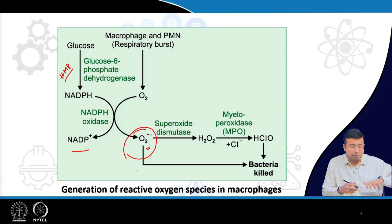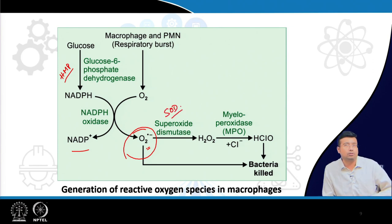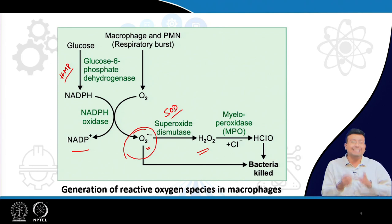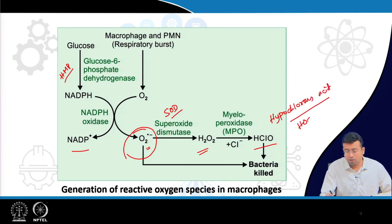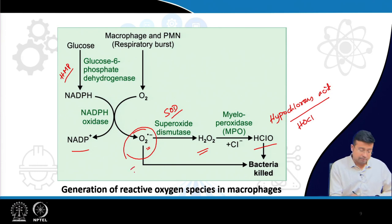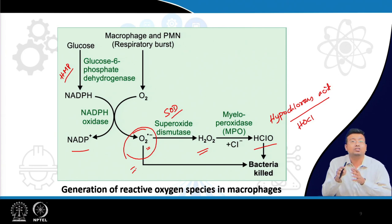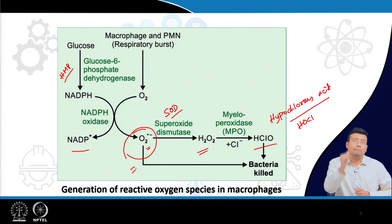When NADPH oxidase acts, NADPH is oxidized to NADP⁺ and the electrons are used to convert oxygen to superoxide radical (O₂•⁻). NADPH oxidase produces superoxide radical, which is further acted upon by superoxide dismutase (SOD) to produce H₂O₂. Then myeloperoxidase (MPO) acts on H₂O₂ in the presence of chloride ions to produce hypochlorous acid (HOCl), which along with superoxide and H₂O₂ attacks and kills bacteria.